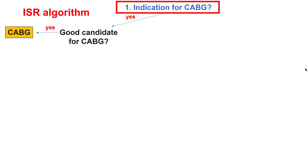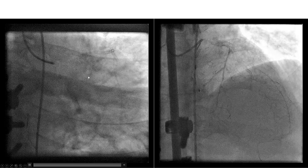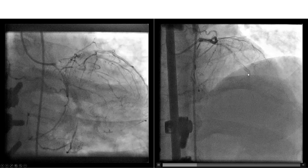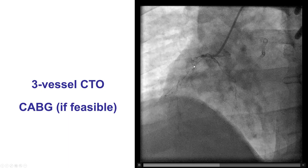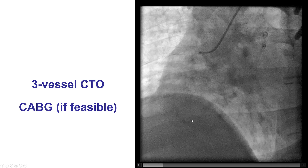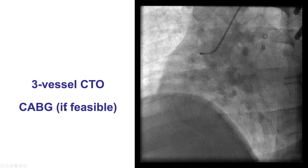The first consideration in a patient who presents with ISR is whether there is an indication for coronary bypass graft surgery, and also whether the patient is a good candidate for coronary bypass. This is an example of a patient who presents with three-vessel disease. There is in-stent CTO in the LAD, in-stent CTO in the obtuse marginal branch, and a de novo CTO in the right coronary artery. Patients like this with highly complex native coronary artery disease, especially with occlusive in-stent restenosis in two vessels, are best served by coronary bypass graft surgery, if it is feasible and there are good surgical candidates.